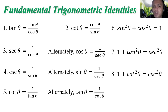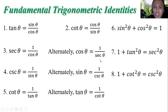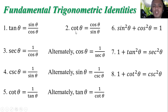Also, we cannot substitute cosine theta as 1 over secant theta because secant theta is not involved in the expression. That's why the best option is to change cotangent theta to cosine theta over sine theta, and then cancel out the sine theta.